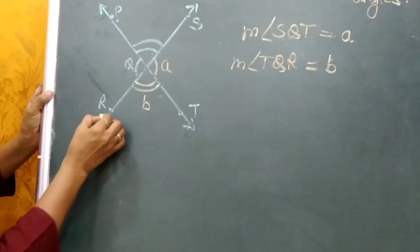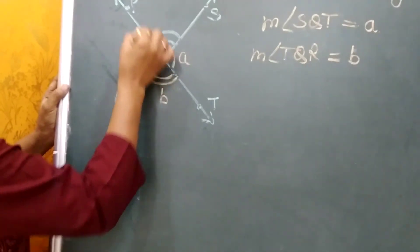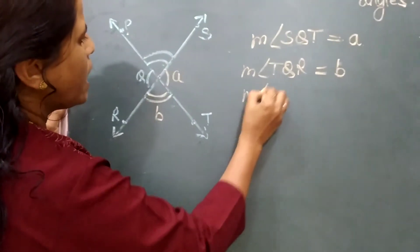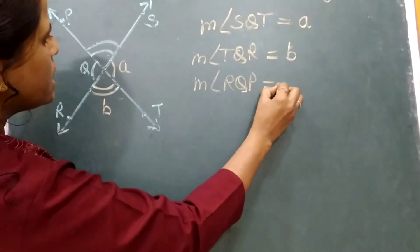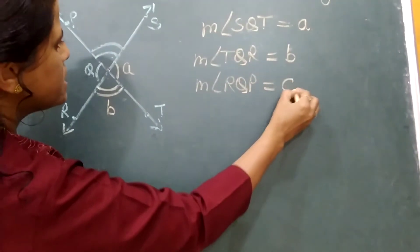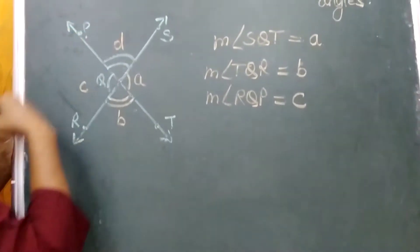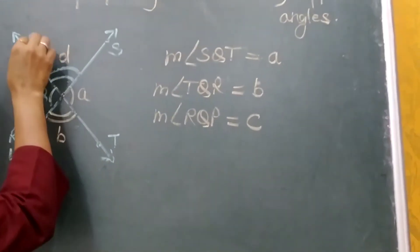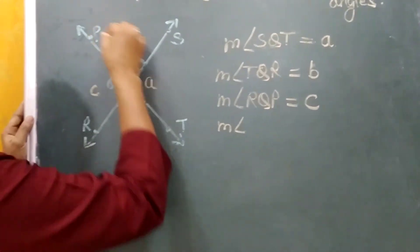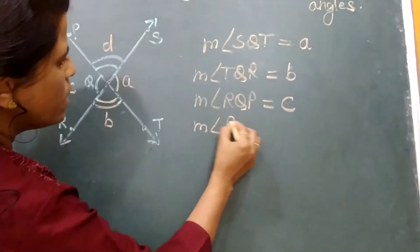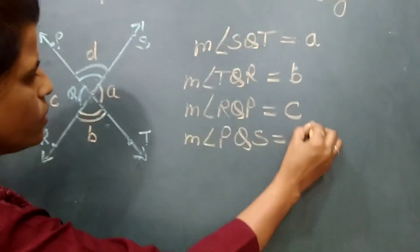Now see here, the measure of angle RQP is equal to C. And the angle formed here, let's suppose it is D. So the measure of angle TQS is equal to D.